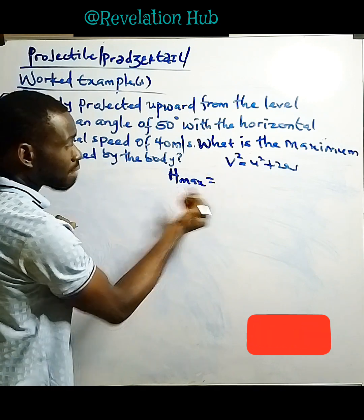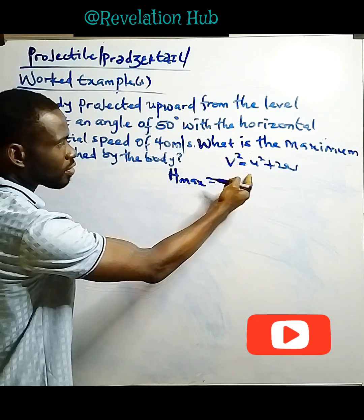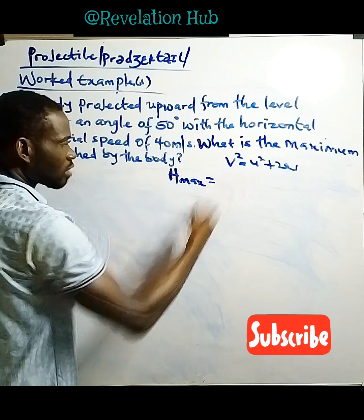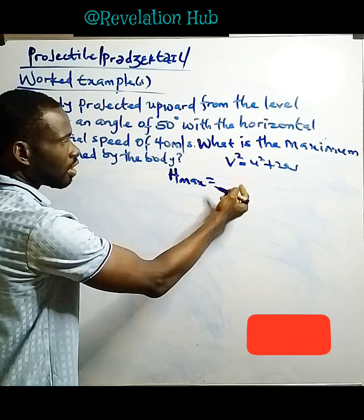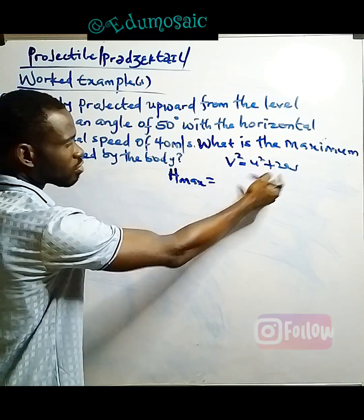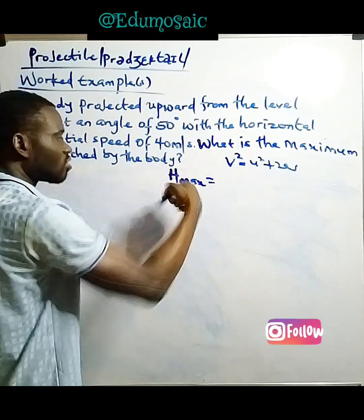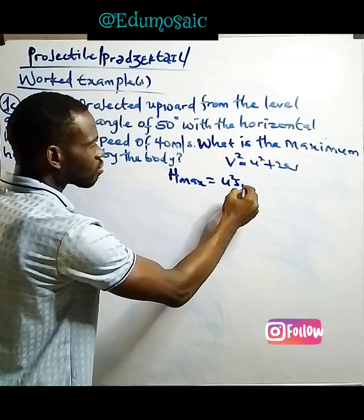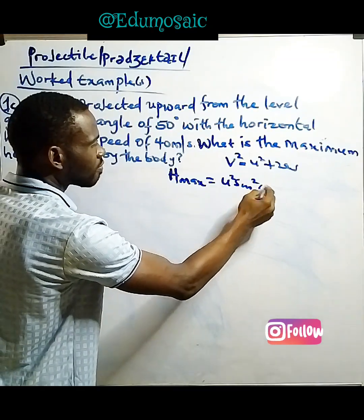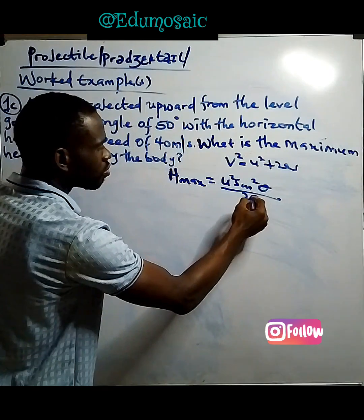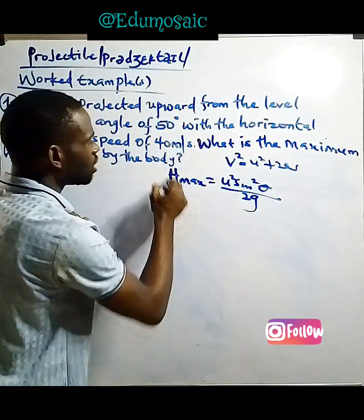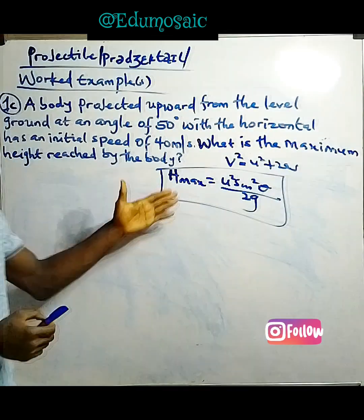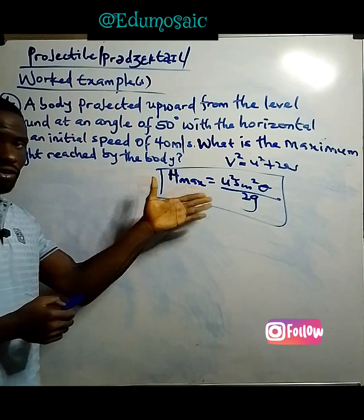At max height, the final velocity is 0. So: 0² = (u sinθ)² − 2gh. Rearranging gives us the formula: H_max = u² sin²θ / 2g. This is the formula for the maximum height attained.